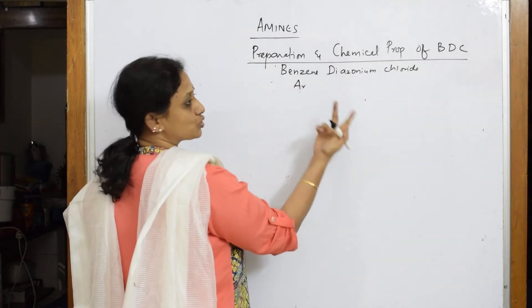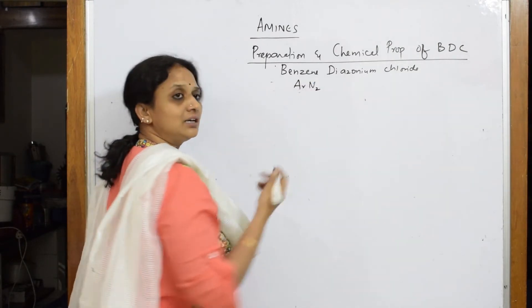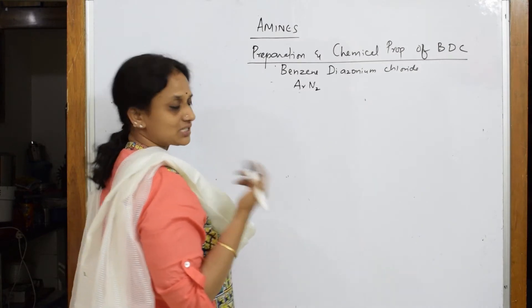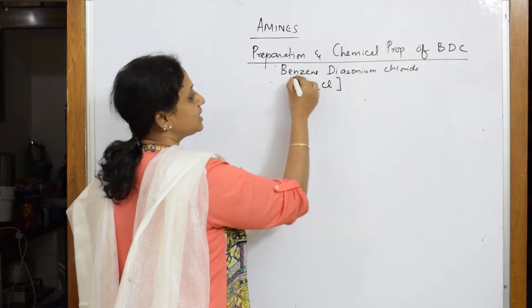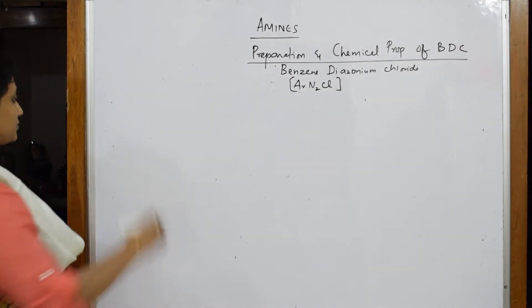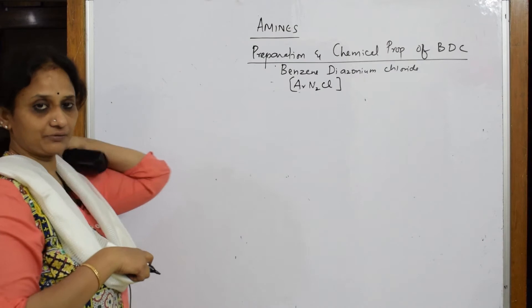Di means 2, azonium means N2, and linked to one more nitrogen is azo group with N2 because it is di. Chloride - benzene diazonium chloride. First important thing: let me start like earlier, first I have to prepare BDC.